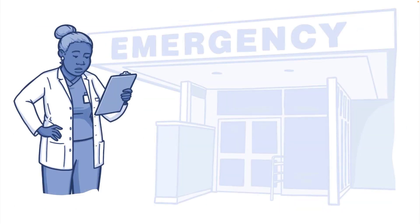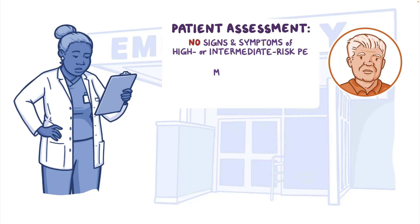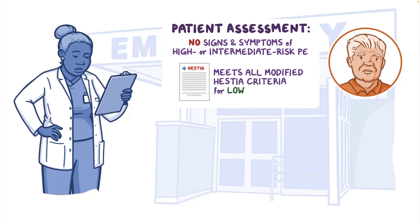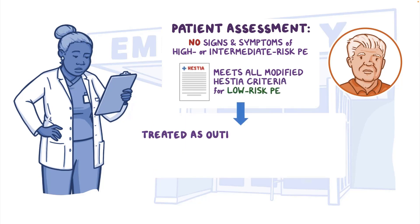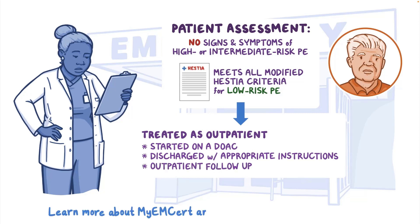In the given scenario, the emergency physician assesses Alex to have no signs or symptoms of high or intermediate risk PE, and he meets all of the modified Hestia criteria for low risk PE, which can be treated as an outpatient. Per the current guidelines, the patient is started on a DOAC and discharged to home with appropriate instructions for home care and outpatient follow-up. Learn more about myEMSERT and key advances at www.abem.org.